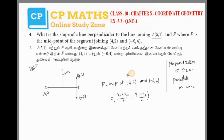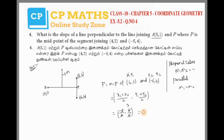This is x1, this is y1, this is x2, this is y2. x1 plus x2 is minus 2, minus 2 by 2. y1 plus y2 is minus 4 plus 6 by 2. Cancelling, we get 1 and 3. So P is (-1, 3).